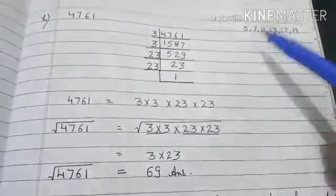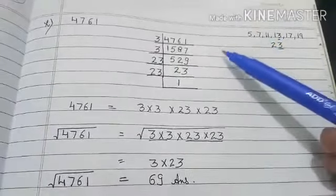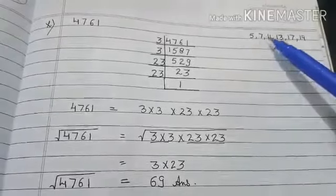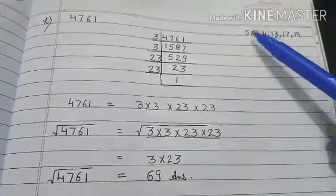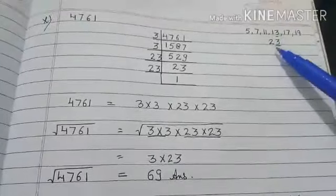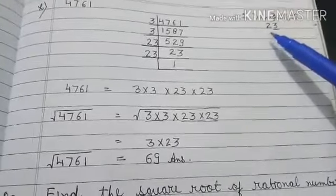So either you follow this method - after 3 you will check by 5, then 7, then 11, then 13, 17, 19, then 23. The prime series, as I told you earlier.